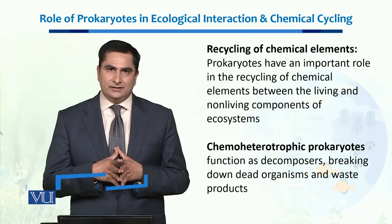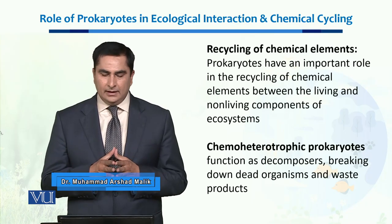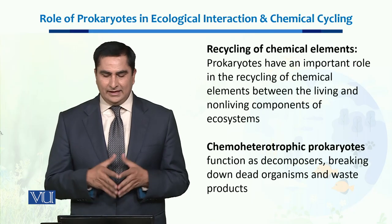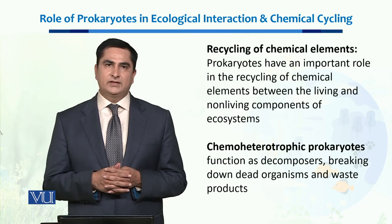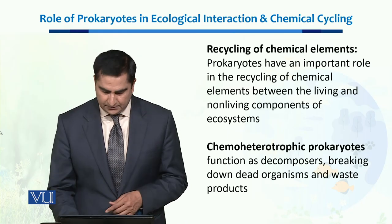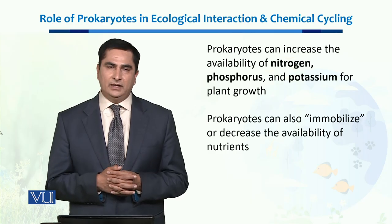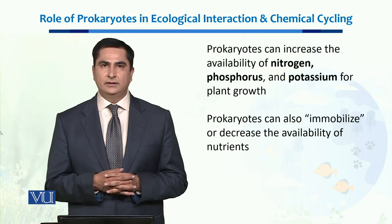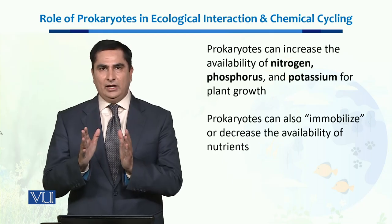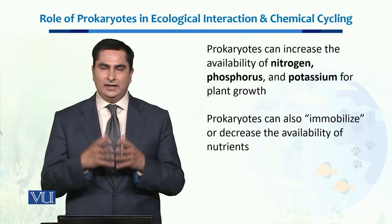We have different types of prokaryotes which have different roles in the recycling of these chemicals. For example, chemoheterotrophic prokaryotes function as decomposers. They break down dead organisms and waste products and liberate certain chemicals which are trapped in their bodies. These prokaryotes help increase the availability of elements including nitrogen, phosphorus, and potassium for plant growth, so plants can utilize them to grow and synthesize different products including foods.